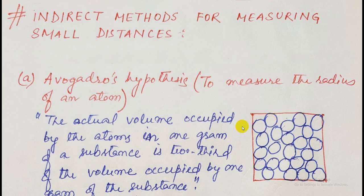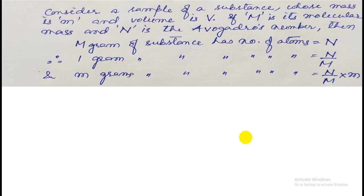Avogadro said that the actual volume is two-thirds of the total volume. Whatever is the total volume, if V is the total volume, then the actual value will be two-thirds of the total volume V. That is Avogadro's hypothesis. On the basis of this, we are going to find the radius.